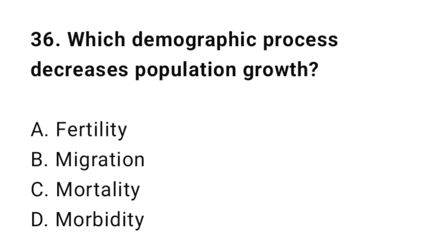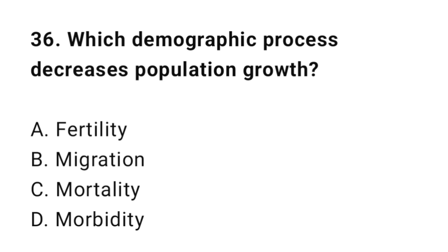Question number thirty-six: Which demographic process decreases population growth? The correct option is C: Mortality.